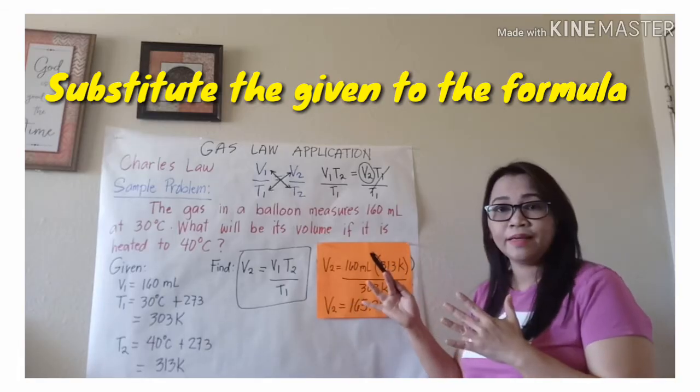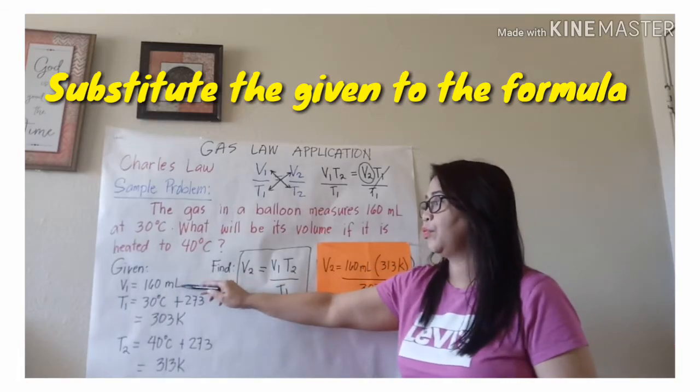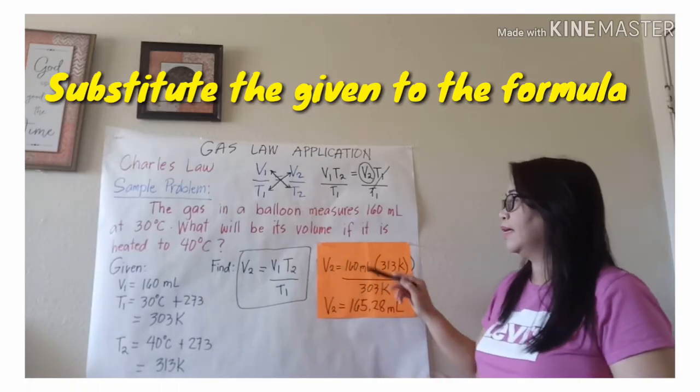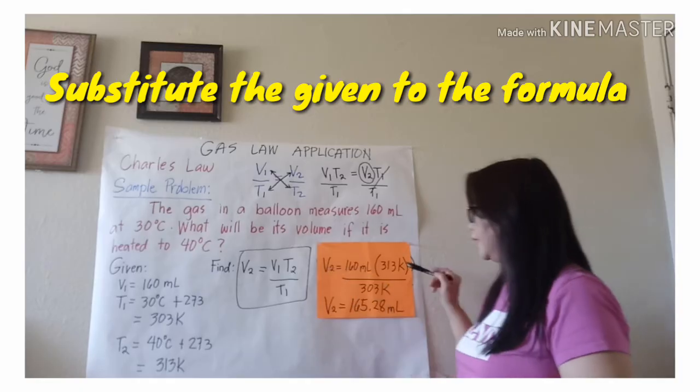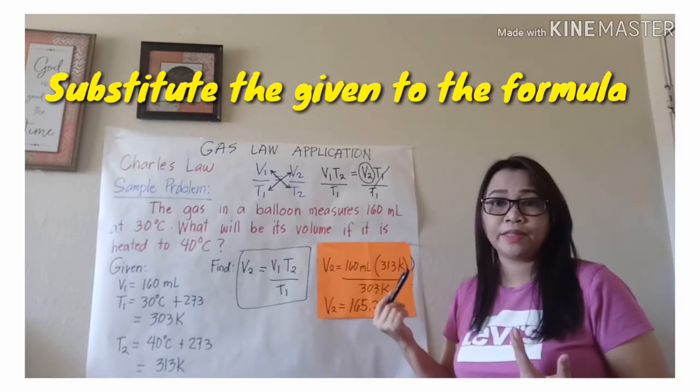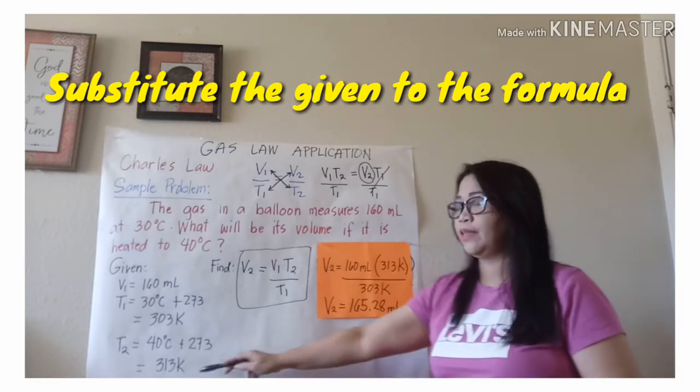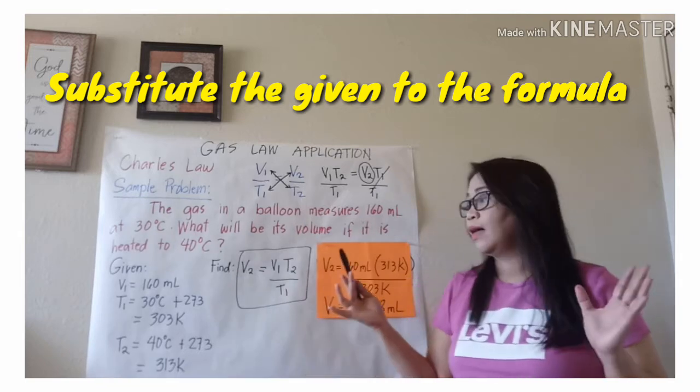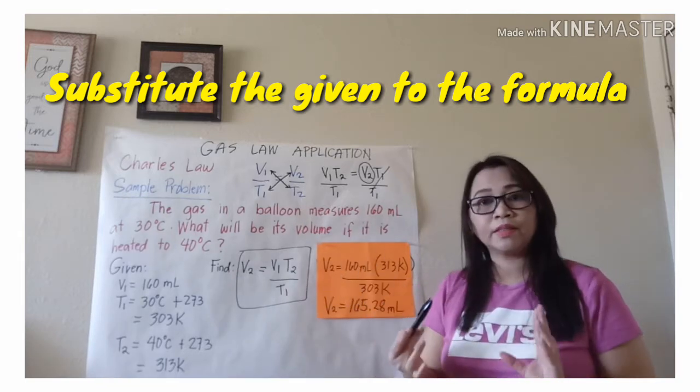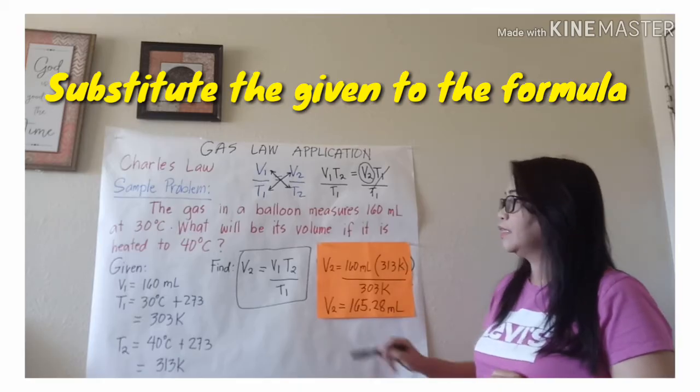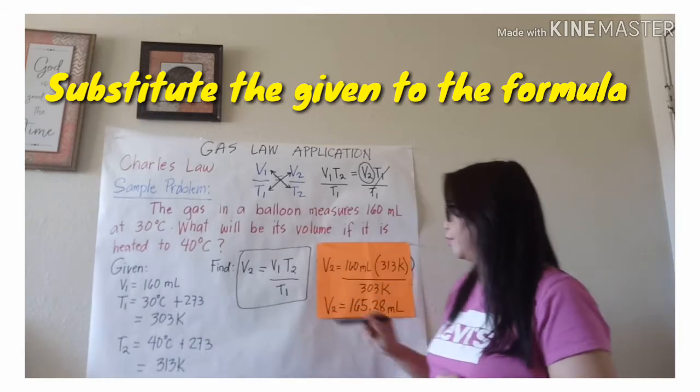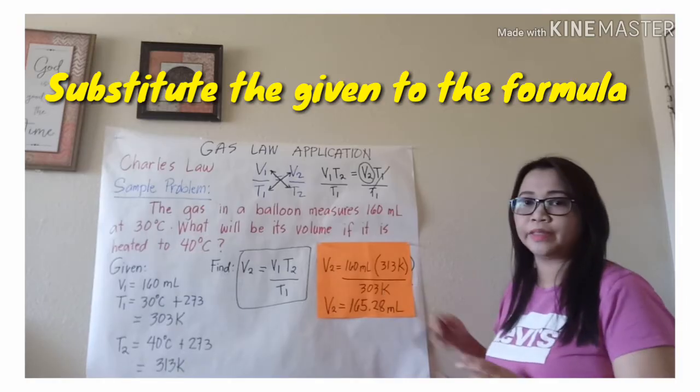To plug in the given, we have V1, which is equal to 160 ml, and then T2 is 313 Kelvin. Instead of writing 40 degrees Celsius, you're going to write 313 because in Charles Law you need to convert the temperature to Kelvin. So that is 313 Kelvin divided by T1, which is 303 Kelvin.